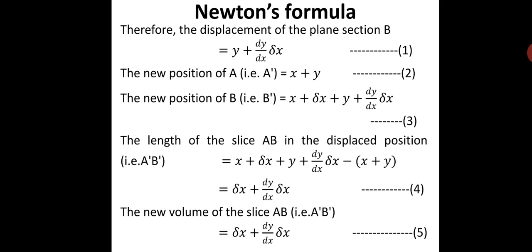Here, x plus delta-x is the original position of B and y plus dy/dx times delta-x is the displacement of B, so x plus delta-x plus y plus dy/dx times delta-x represents the new position of B. After displacement, the length of slice AB equals the new position of B minus the new position of A. The x terms and y terms cancel, giving delta-x plus dy/dx times delta-x.